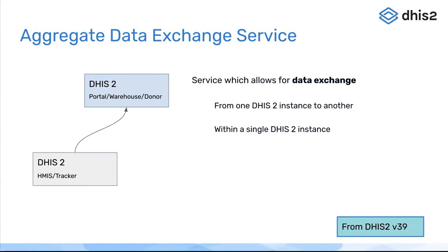In version 39 and now 40 as well, we have the ability to submit or send data from one DHIS2 instance to another, as well as to transform data within a particular DHIS2 instance. This is a very powerful feature, particularly when you have multiple instances spread out within a country, or maybe multiple countries reporting to a global instance, because it allows the user of the downstream instance to configure and then review a submission before it gets sent to the upstream service.